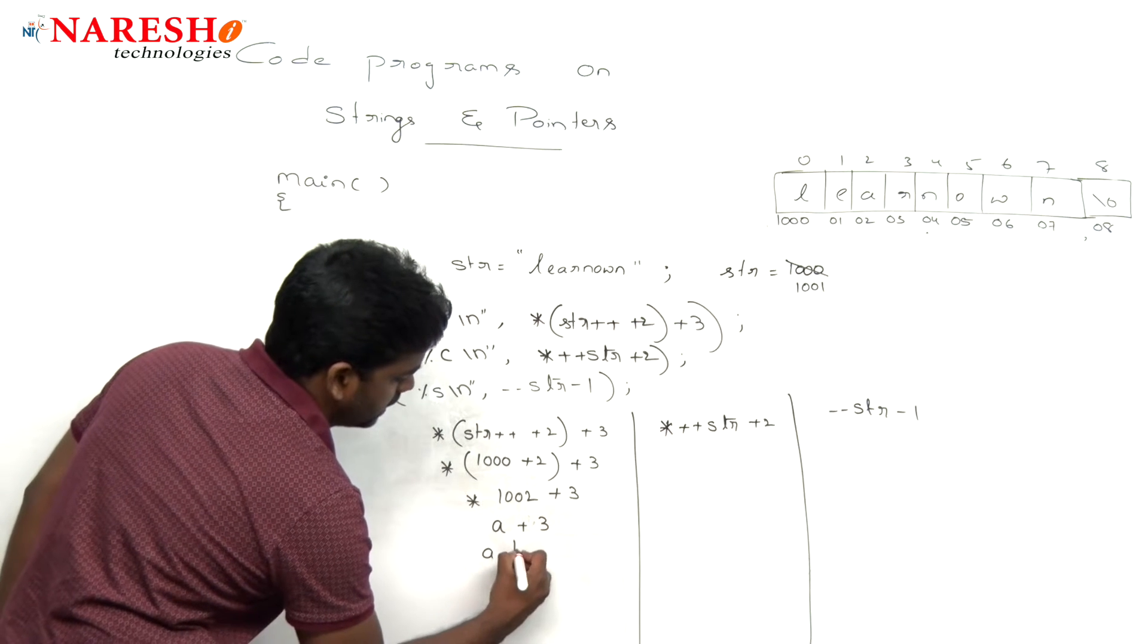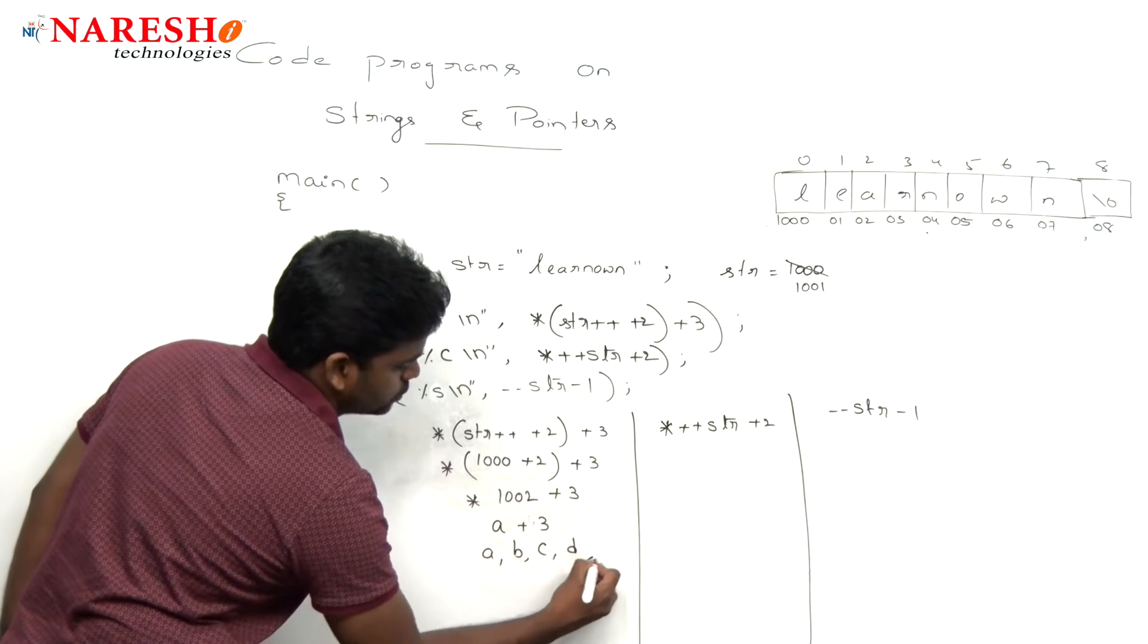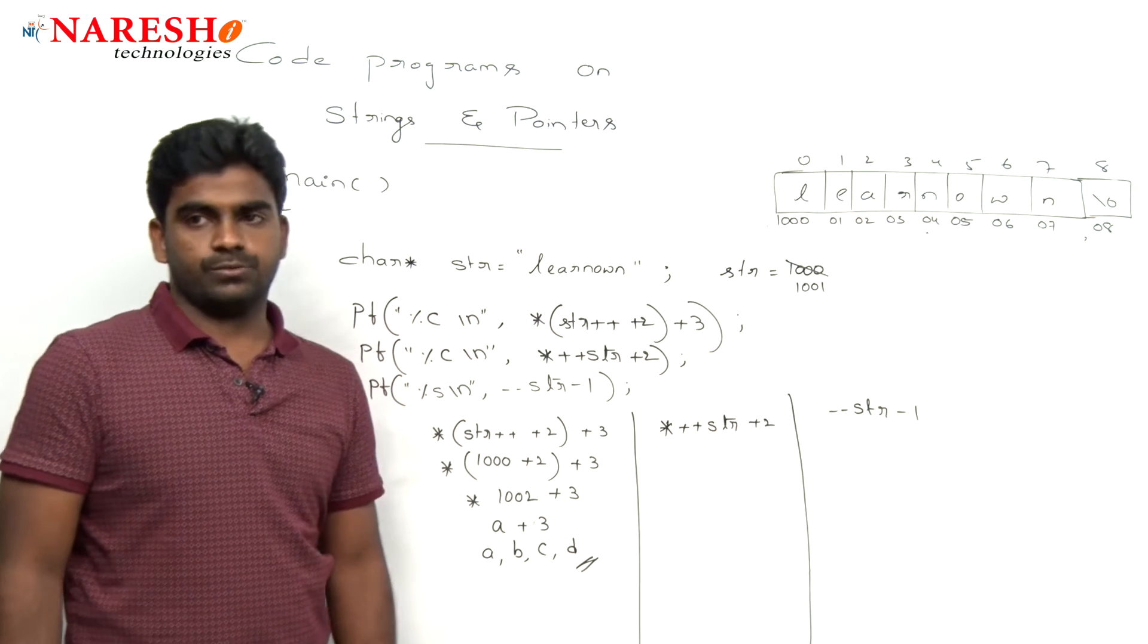It will increase the ASCII value and the corresponding character will be displayed. For example, here a, b, c, d. So d is the output of first one.